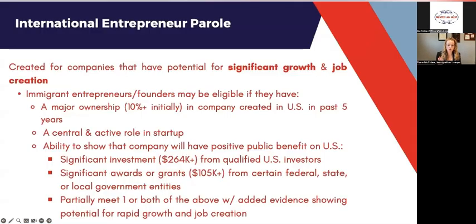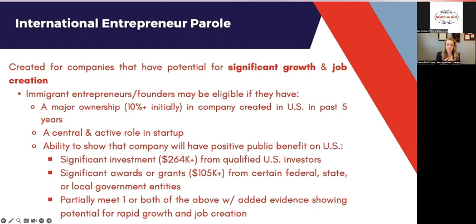This option was really created for companies that have potential for significant growth and job creation in the US. That's the overarching umbrella — we must show that the companies have potential for significant growth and job creation here in the US. An immigrant entrepreneur — the founder or co-founders — may be eligible if they have a major ownership share in the company, defined as 10% or more initially, and the company was created in the US in the past five years or received funding in the past five years.